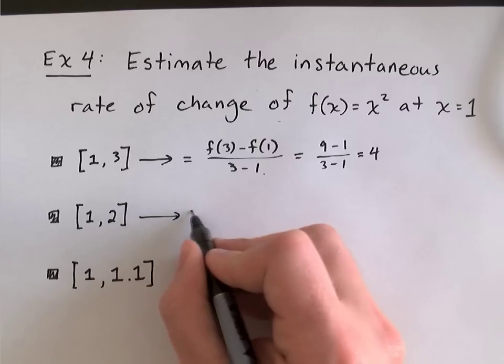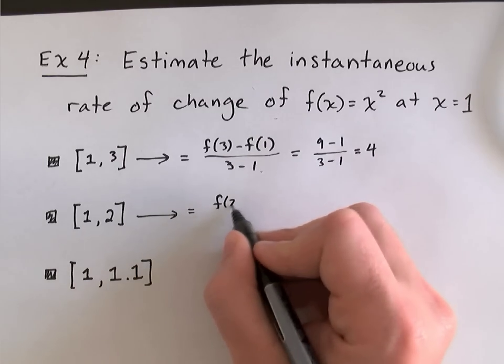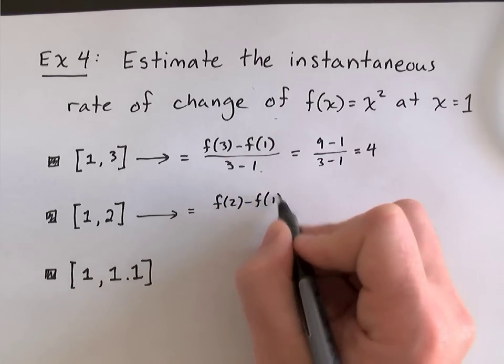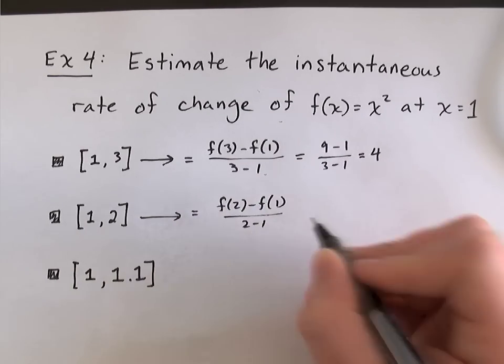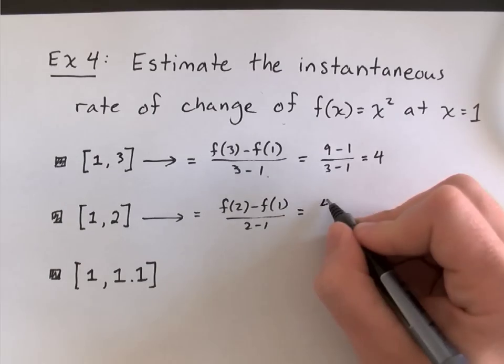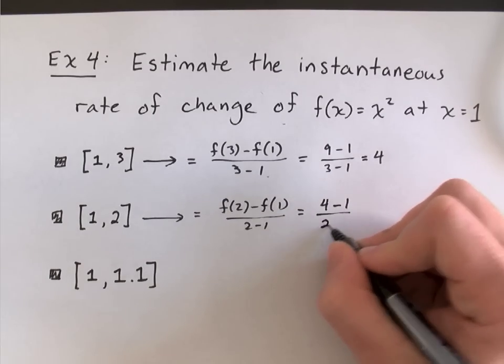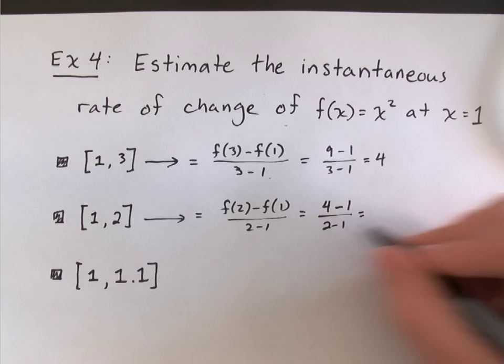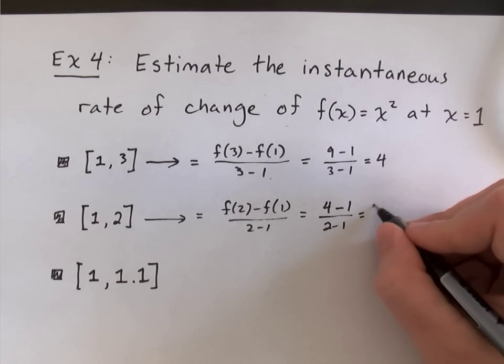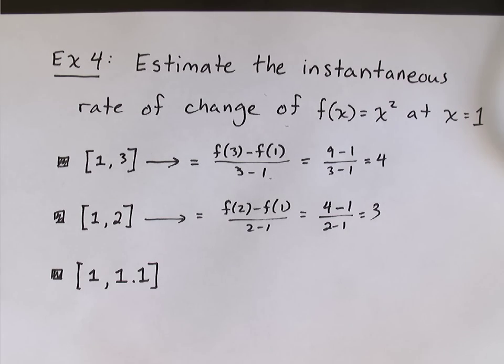The next example, I'll say f(2) minus f(1) over 2 minus 1. This time, I'll have 4. That's 2 squared minus 1. That's 1 squared over 2 minus 1. So, that's 3 over 1. Now, my estimate's at 3. Got a little bit better.